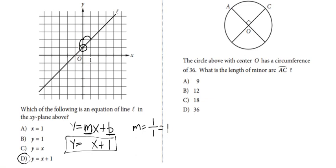The circle above with center O has a circumference of 36. What is the length of the minor arc AC? If we look at the minor arc we can see that it has this angle of 90 degrees which is one-fourth of the entire circle.